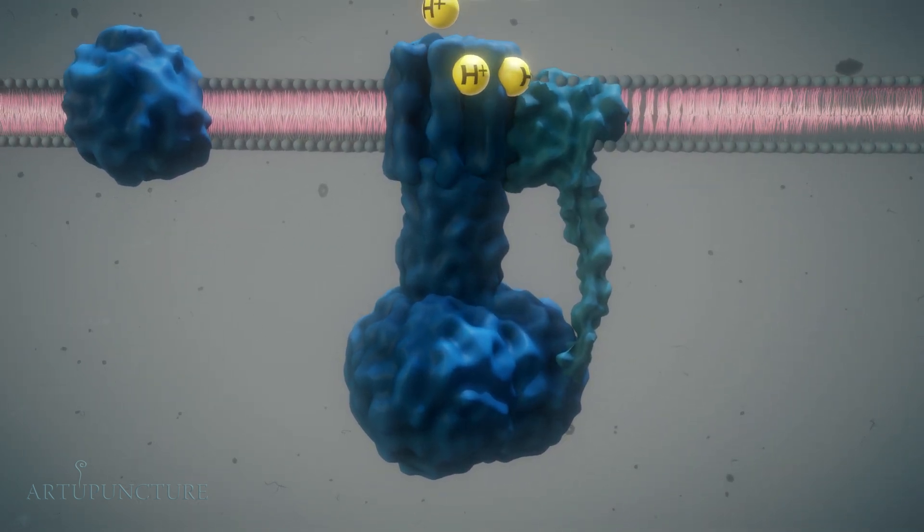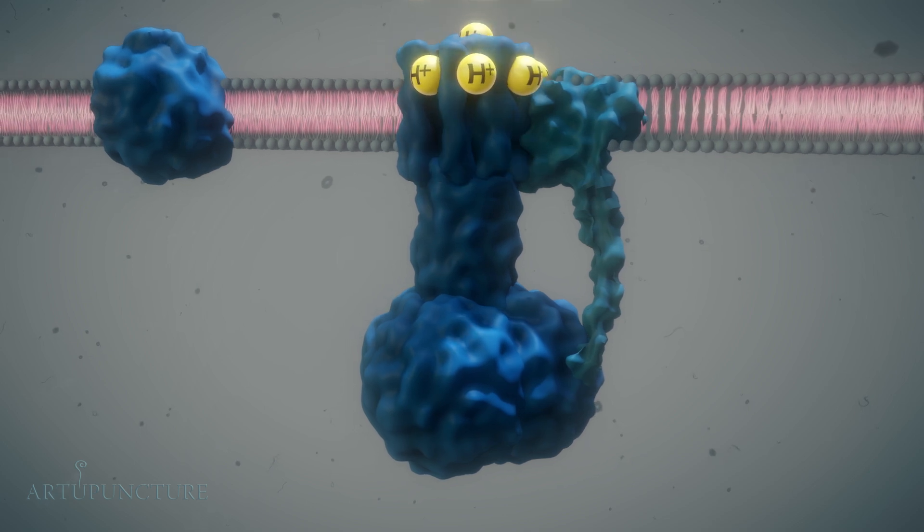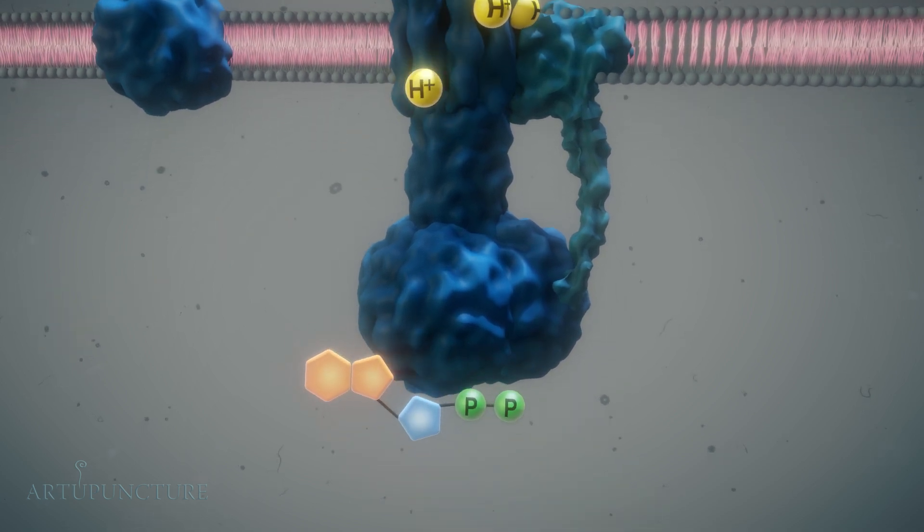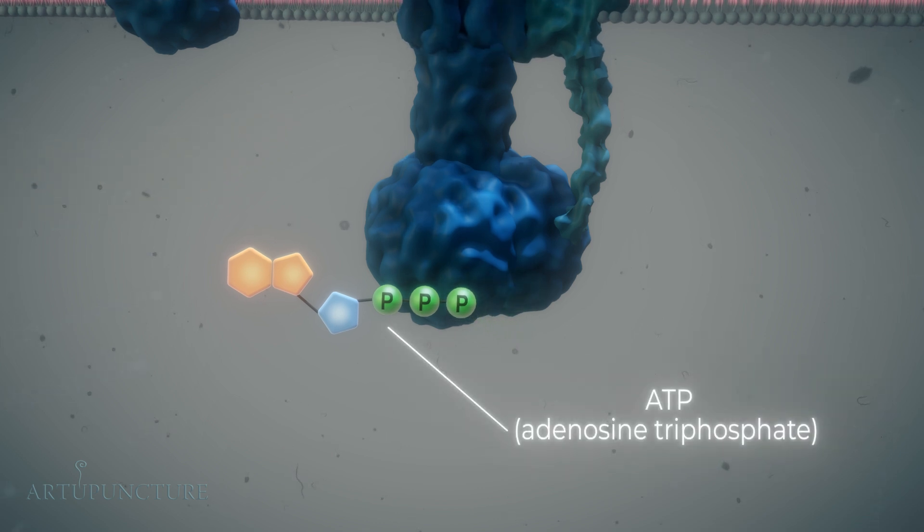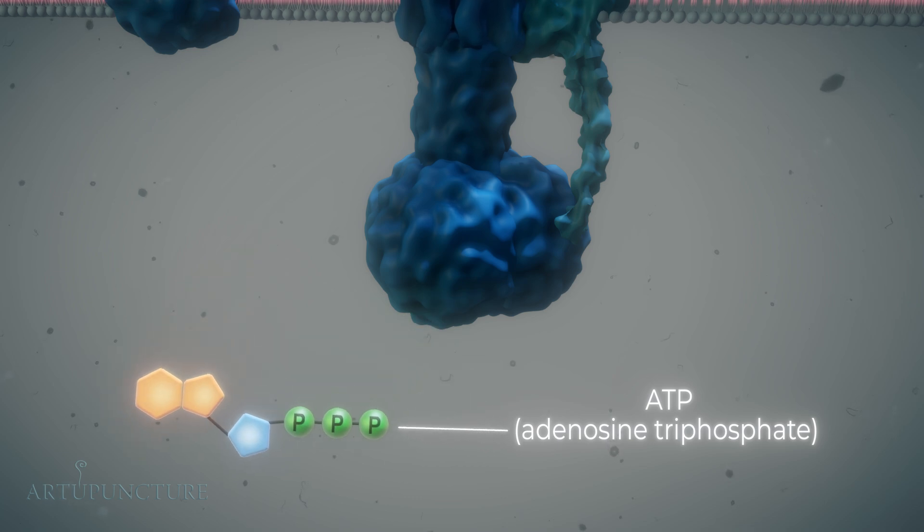This mechanical rotation facilitates the binding of ADP and inorganic phosphate, catalyzing the formation of ATP. As newly synthesized ATP emerges, it is released into the mitochondrial matrix, ready to fuel cellular activities.